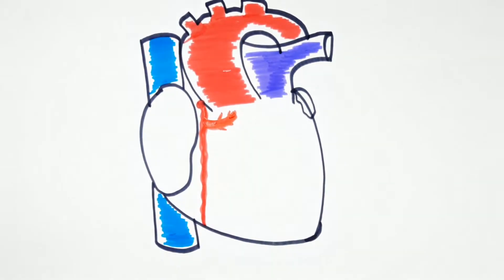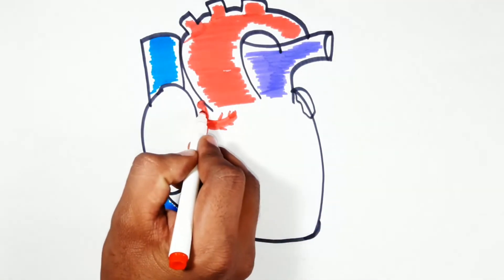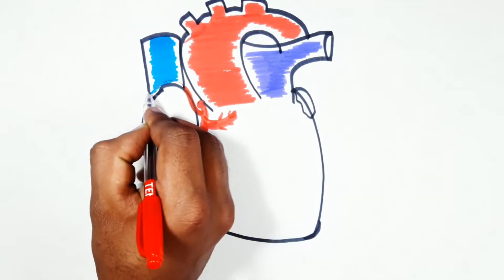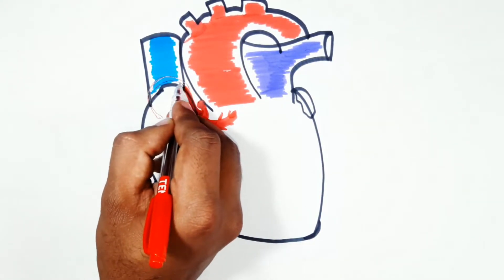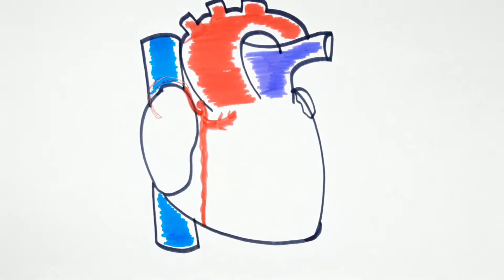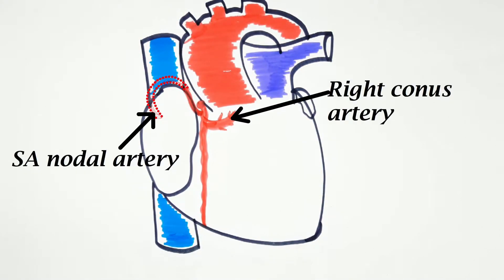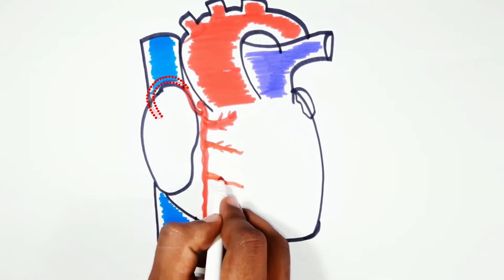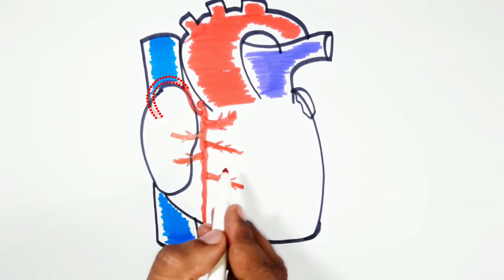The conus artery runs upwards and medially on the front of the infundibulum of the right ventricle. It frequently anastomoses with a similar branch from the left coronary artery around the origin of the pulmonary trunk. The SA nodal artery is another branch, which passes back between the right auricle and the aorta. It forms a vascular ring around the termination of the superior vena cava. It supplies the SA node in about 60% of hearts. The right coronary artery gives some branches to the right atrium and right ventricle on the anterior surface of the heart.